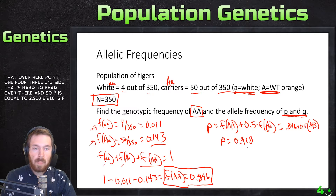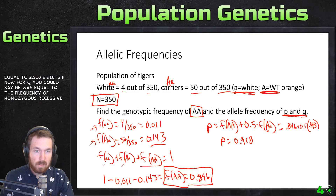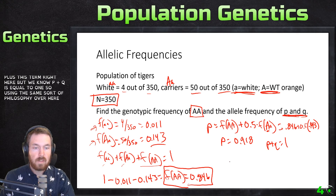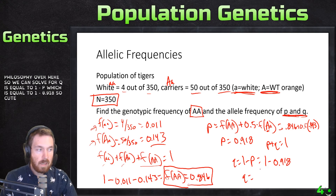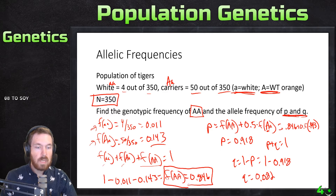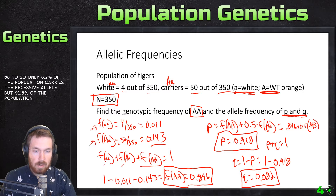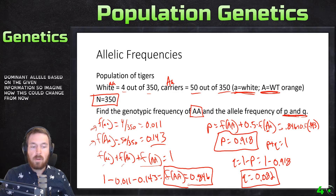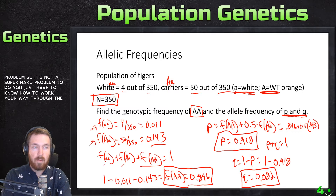For q, since p + q = 1, we solve q = 1 − p = 1 − 0.918 = 0.082. So only 8.2% of the population carries the recessive allele, while 91.8% carries the dominant allele. The frequency can vary from population to population, but it's not a hard problem once you know how to work through it.